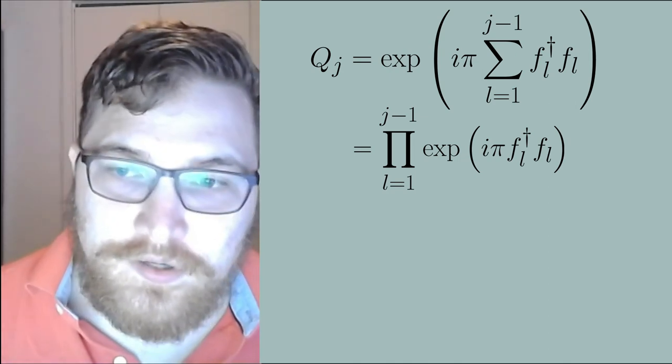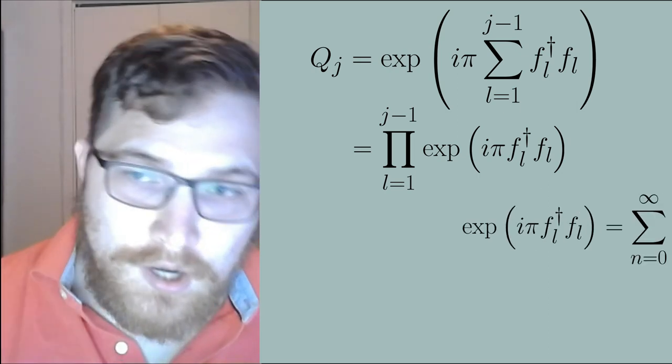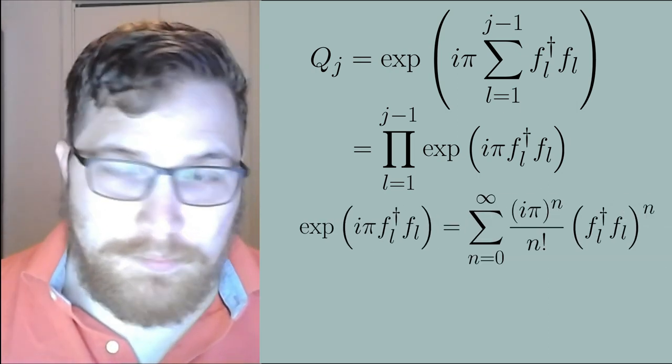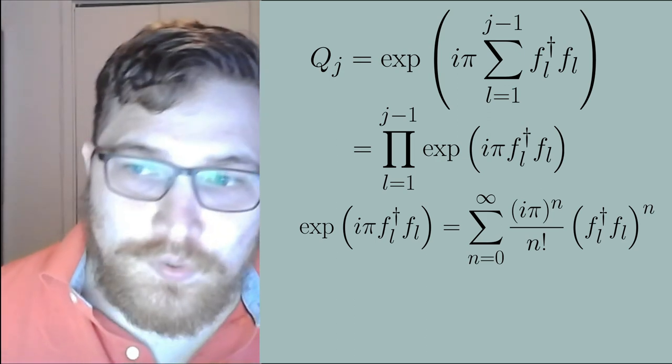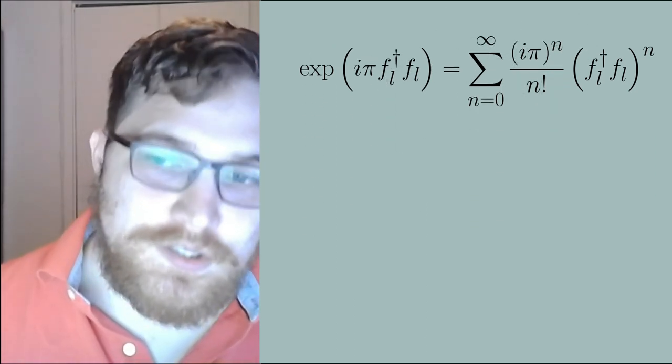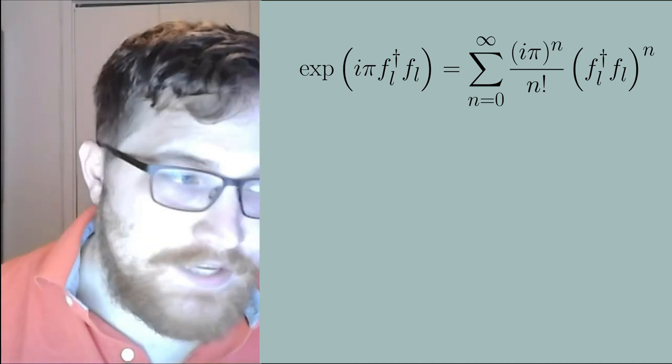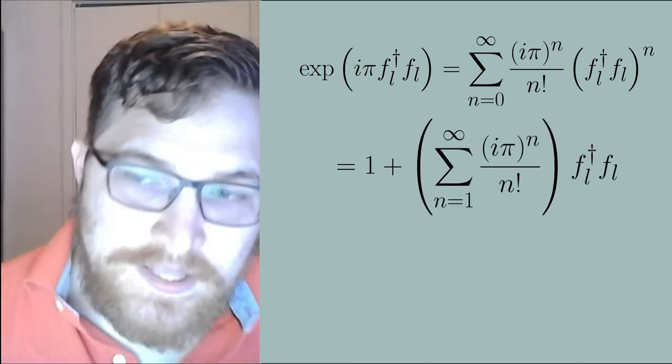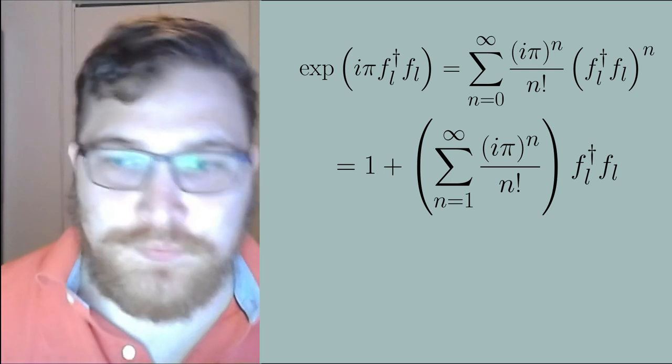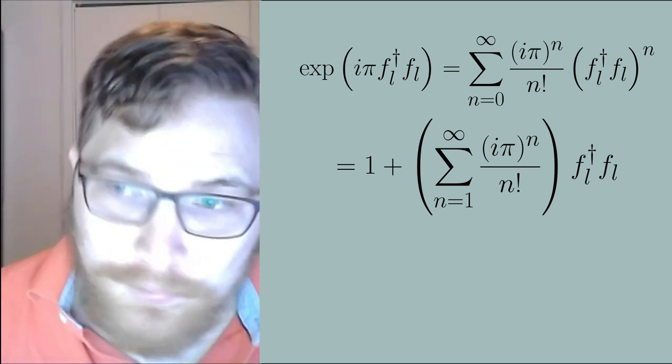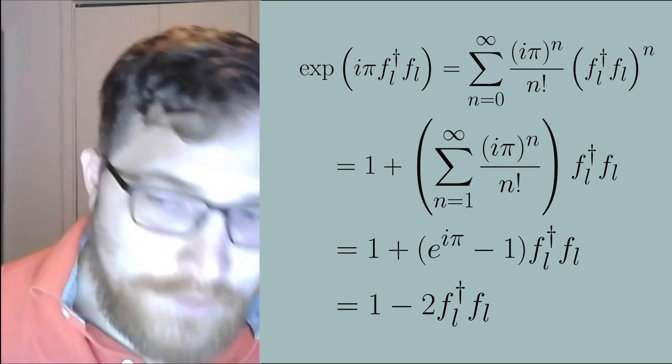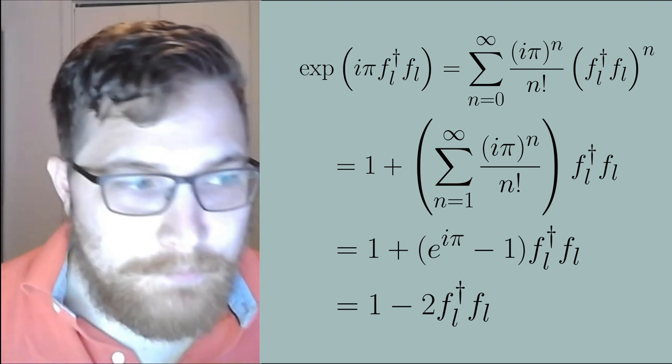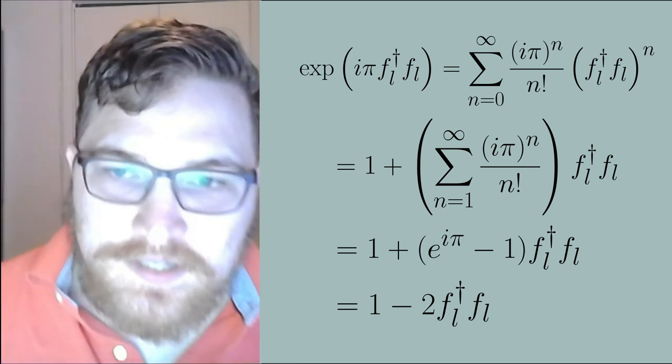So because of our previous identities that we've worked out we know how to deal with these terms and we can rewrite the sum in the following way. This then simplifies a little bit as we know what the sum in the brackets becomes and then this of course is reduced to the following expression which is just one minus two times a number operator. This allows us to fully rewrite the exponential in the transformation as the following product which is much easier to deal with analytically.